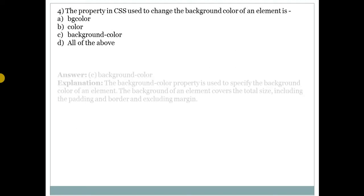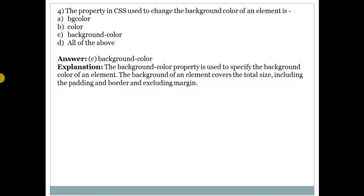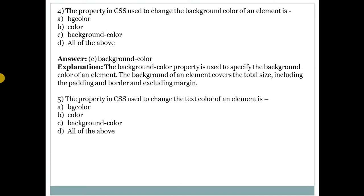Fourth question: the property in CSS used to change the background color of an element? Answer is C — background-color. This property is used to specify the background color of an element, covering total size including padding and border but excluding margin.